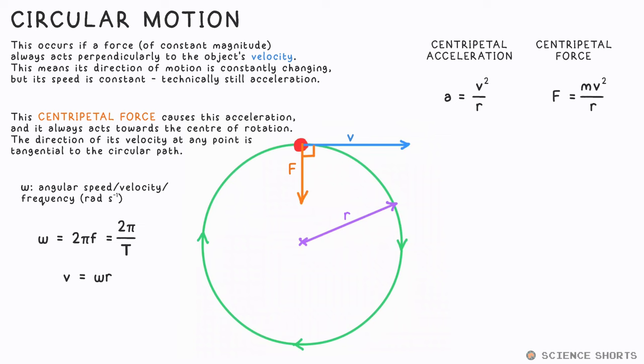As normal frequency is 1 over the time period, omega also equals 2πf. Replacing v in our centripetal acceleration and force equation with this, we end up with the alternative equations: a equals ω²r and F equals mω²r.